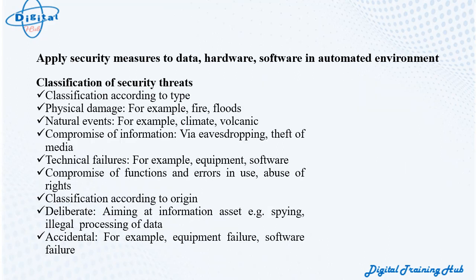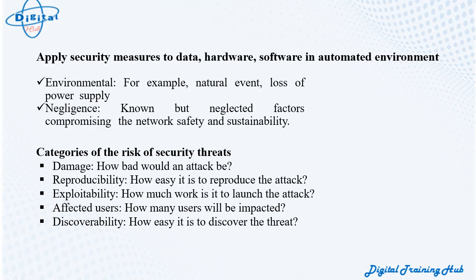Classification of security threats. By type: physical damage (e.g., fire, floods), natural events (e.g., climate, volcanic), compromise of information (e.g., eavesdropping, theft of media), technical failures (e.g., equipment and software), and compromise of functions, errors in use, and abuse of rights. By origin: deliberate — aiming at information assets, e.g., spying, illegal processing of data; accidental — e.g., equipment or software failure; environmental — e.g., natural events and loss of power supply; and negligence — known but neglected factors compromising the network's safety and sustainability.